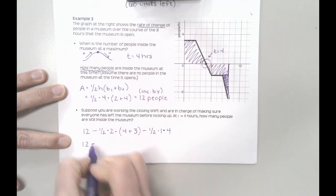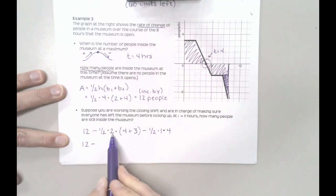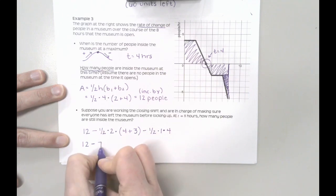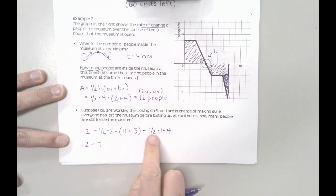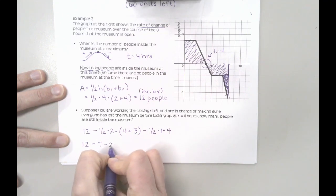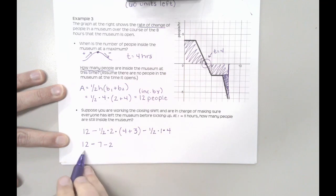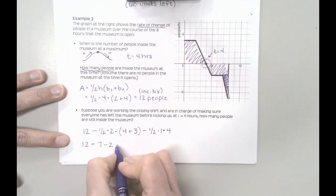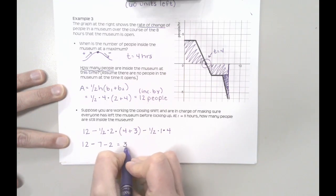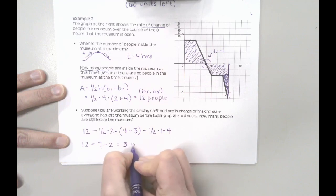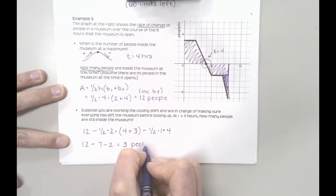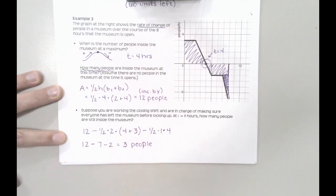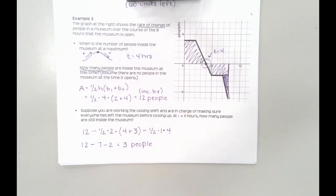So this is 12 minus one-half times 1 times 7 — that's 7 — and then one-half times 4 is 2. So 12 minus 7 minus 2 — that's really just 12 minus 9. So I have 3 people left in the museum at those 8 hours.